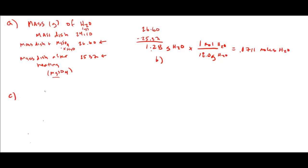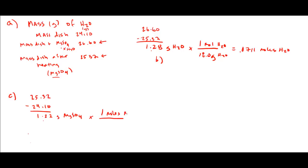Now if we focus on the MgSO4, letter C asks us to calculate the mass in grams of MgSO4. That's going to be our mass of the dish after heating minus the mass of the dish before. We get 1.22 grams of MgSO4. Now we want to get moles of MgSO4.